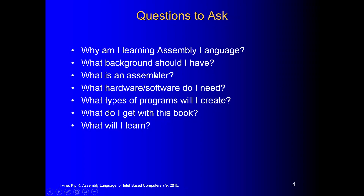What's an assembler? It's a translator, just like a compiler. When you run C++ code, you use Visual Studio as a compiler. An assembler is similar — it's going to take your source code and assemble it into executable code so you can run it on your computer. What hardware or software do you need? Hardware is your PC, and software is Microsoft Visual Studio. You don't need any other software to run your assembly code.